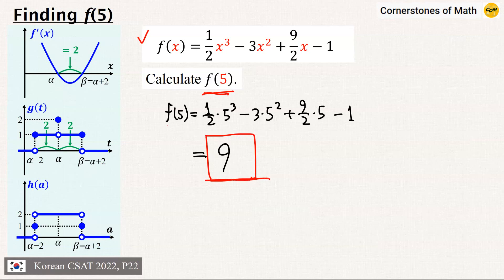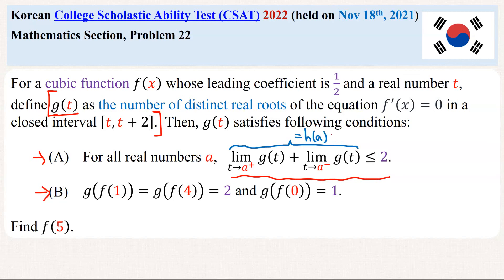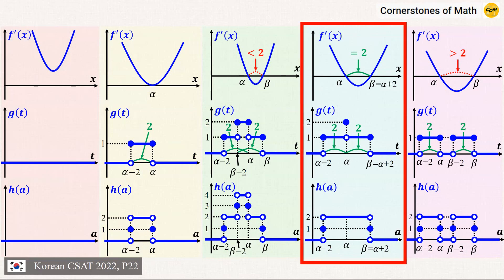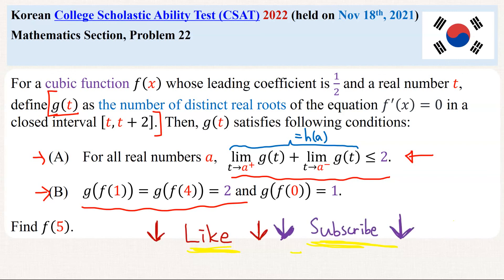And this is our final answer: f(5) = 9. This was quite an interesting problem. We found a cubic function using the clues given in the problem, which look very confusing at first, but actually not that confusing once you can interpret the meaning of these conditions. There are two major important steps in solving this problem: the first is to interpret the meaning of the definition of g(t) and the limit condition, where we defined h(a), allowing us to obtain the big picture of all cases. The second part is to interpret the remaining conditions, which combined with the range of the limit, allowed us to narrow down to the single specific case. Please hit like and subscribe to enjoy other interesting math videos in my channel, and I will see you in another video.